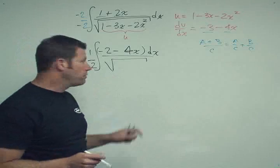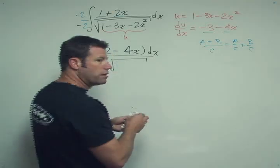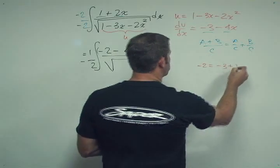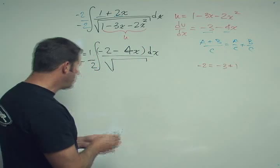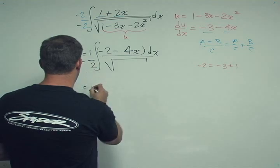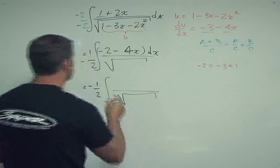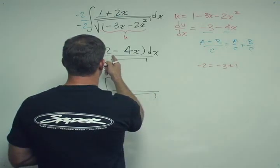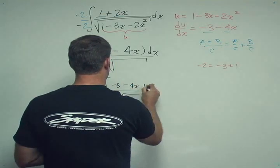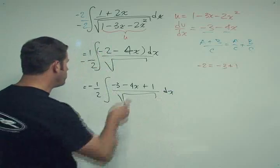So now what can I do next? Well, I can recognize that minus 2, we want minus 3, right? I can recognize that minus 2, now this is tough algebra here. This is a tough part. Minus 2 is equal to minus 3 plus 1. So if I do that, then I can rewrite this problem. So I have minus 1 half, minus 3 minus 4x plus 1 dx. So now we're getting close. Now we can break it into two pieces.